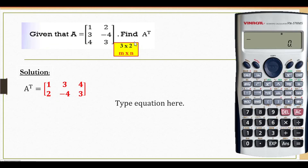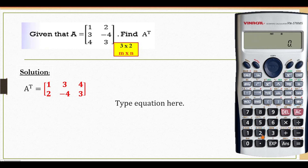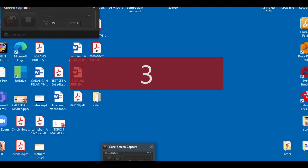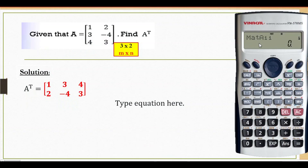Given matrix A, find the transposition of matrix A. First of all, you have to press mode until you see MAT, number 2. Then press shift for MAT, then DIM is for you to insert the matrix. Press number 1 for matrix A. Matrix A is M times N — M is the row of the matrix, so M here is 3. Press 3, then equal to. N is the column of the matrix, so it's 2 — press 2.